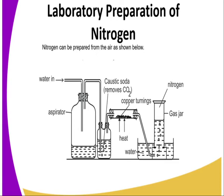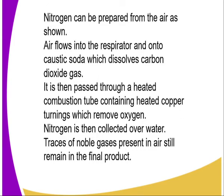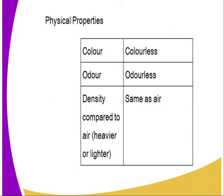To summarize the preparation: air flows into the aspirator and into caustic soda, which dissolves carbon dioxide. It is then passed through a heated combustion tube containing copper turnings, which remove oxygen. Nitrogen is then collected over water. Traces of noble gases remain present in the final product.